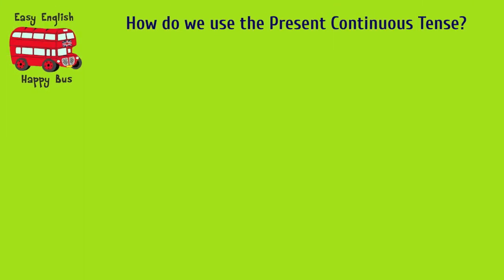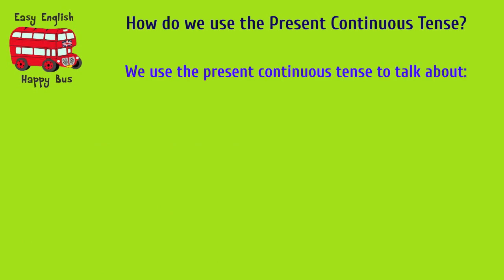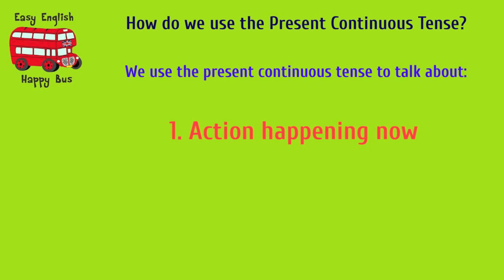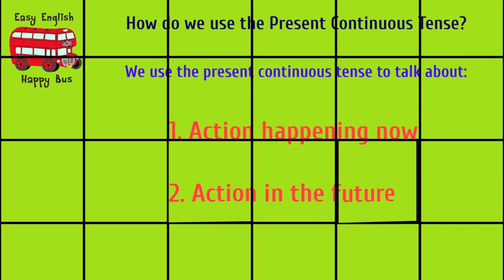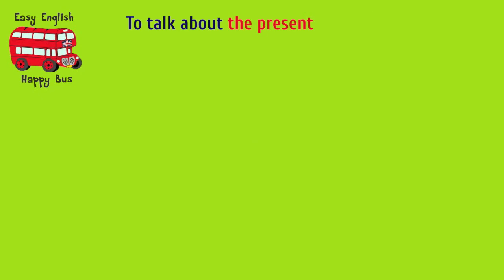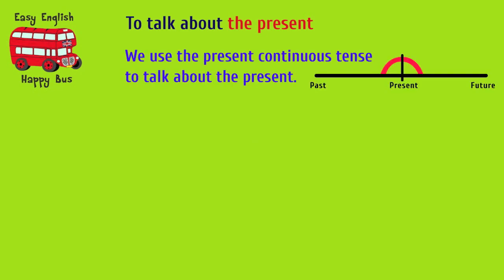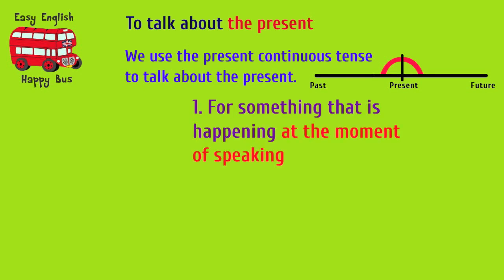How do we use the Present Continuous Tense? We use the Present Continuous Tense to talk about: action happening now, and action in the future. We use the Present Continuous Tense to talk about the present — for something that is happening at the moment of speaking.